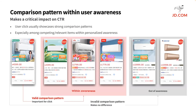User click usually showcases strong comparison patterns, especially among competing or relevant items within personalized awareness. For example, for a user who pursues cost-effectiveness, a sponsored item that is much more expensive than its competing items is obviously less likely to be clicked. Note that comparison patterns play an effect only if they are actually within user awareness. If the user does not know anything about the competing items, there will be no valid comparison pattern. Therefore, the relative positioning of the target item among its competing or relevant items within user awareness could be a strong pattern for CTR prediction.